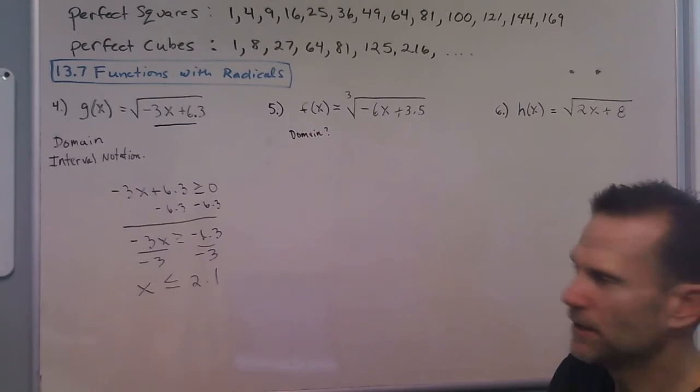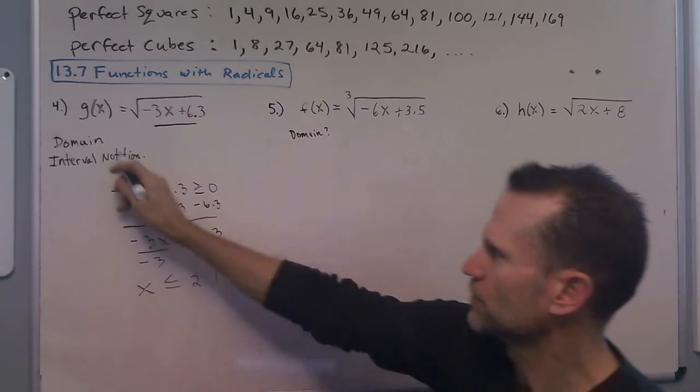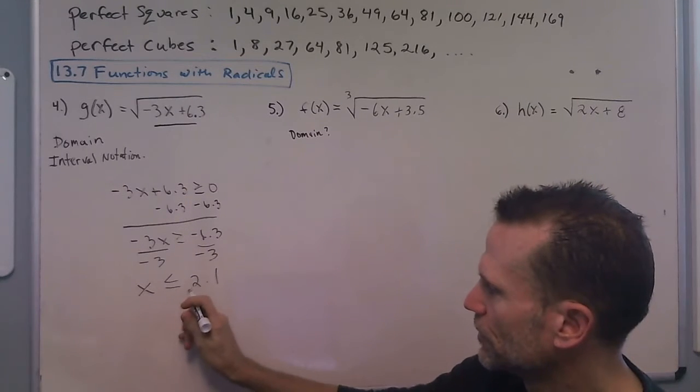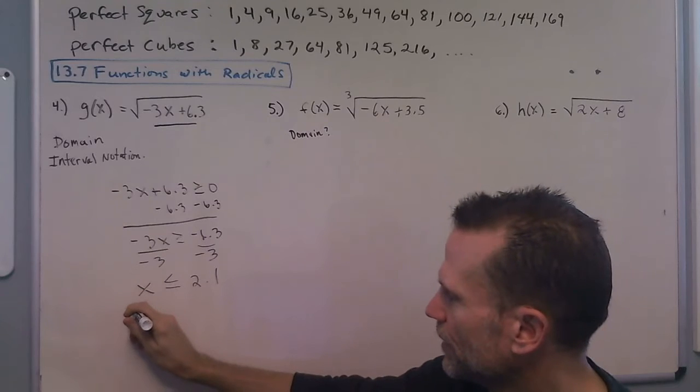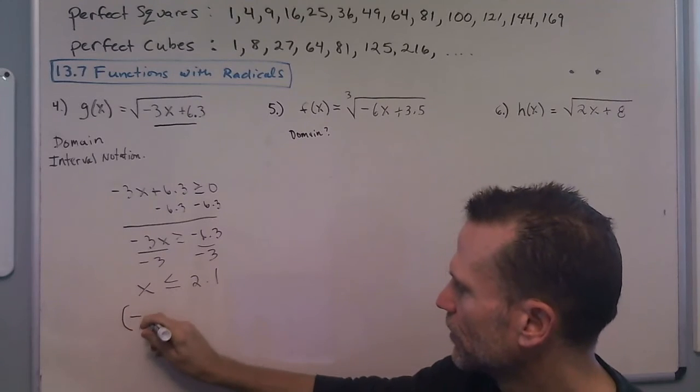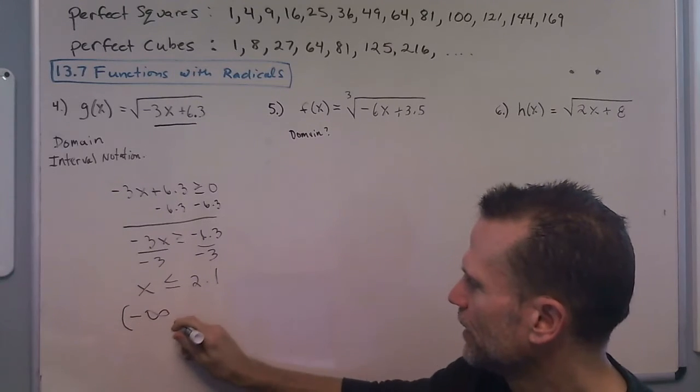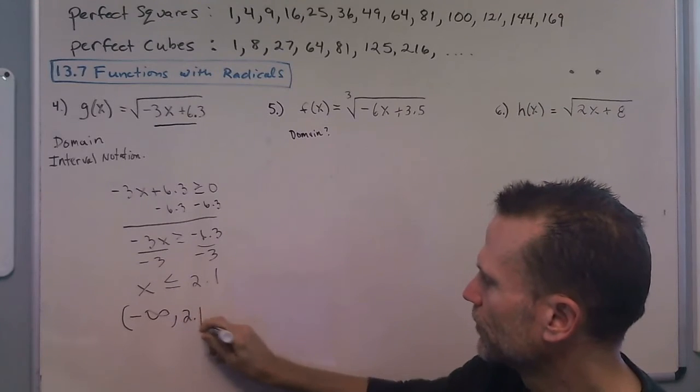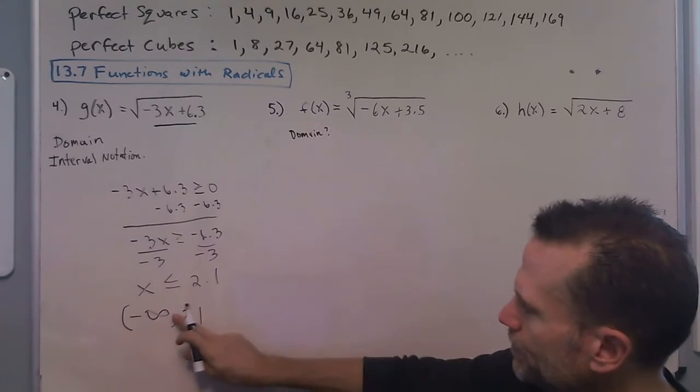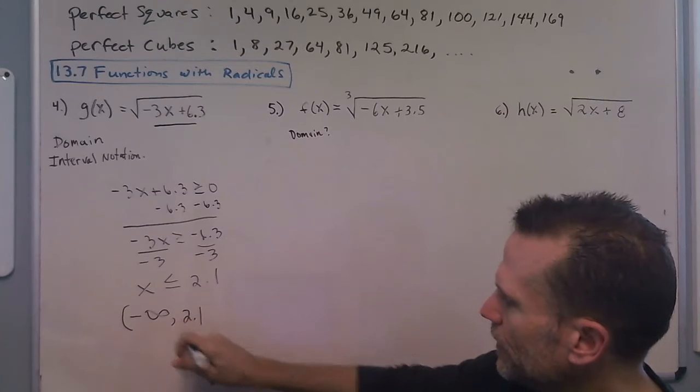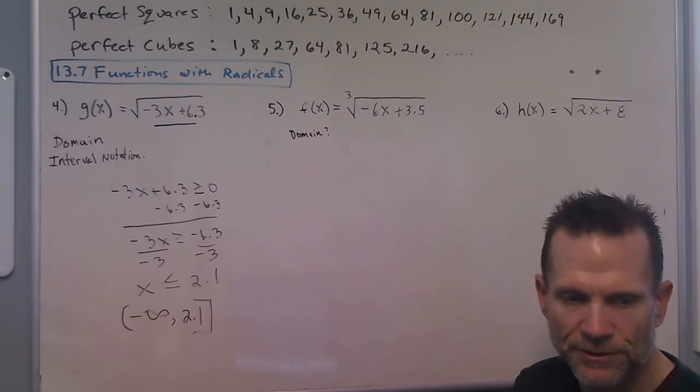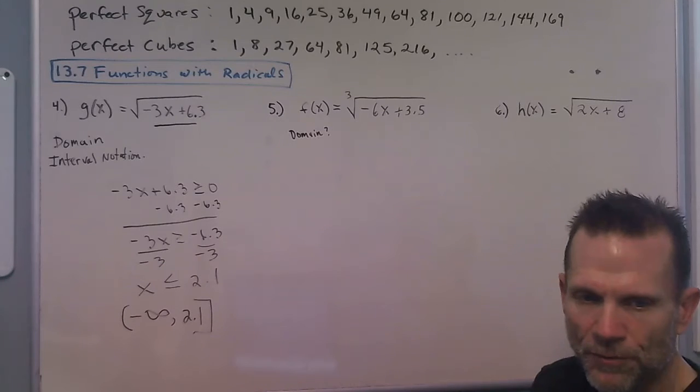So that's the domain of the function, but it asks for interval notation. So remembering our interval notation, this is going to be going towards negative infinity, and then we have 2.1 as our boundary on the right side. And then since it can be equal to 2.1, we use the stronger notation signifying that it can equal 2.1.